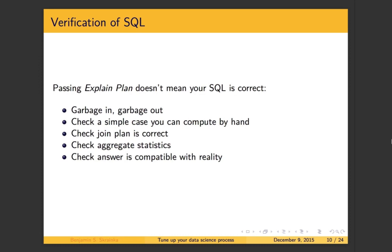It's really important to verify your SQL. When I interview BI engineers, I love to ask them how they know if their SQL is correct, and usually they say, 'It passed explain plan, it must be correct.' This is super important to get right because if you pull garbage data, nothing you do after that is going to get any better. No amount of fancy modeling, machine learning, or statistics is going to correct pulling the wrong data. Maybe you have information leakage — you've coded information about the future into the present, or you've missed some key data, rolled things up to the wrong grain, your join plan's wrong, you've got missing values. Here are some things to do: check simple cases you can compute by hand, use a reduced subset of the data, check that your join plan is correct, draw Venn diagrams, check aggregate statistics, and check that your answer is compatible with reality.